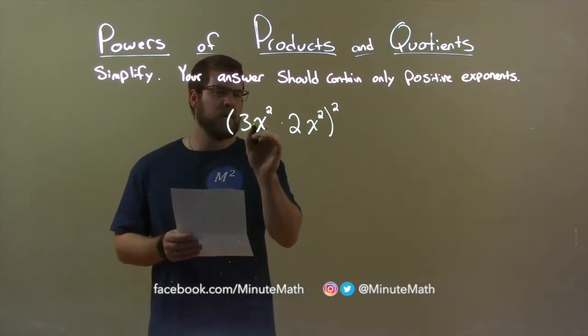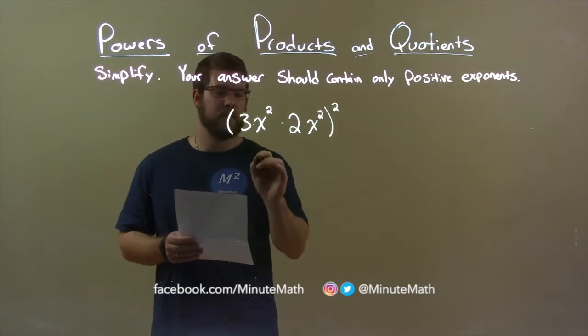Okay, so we look at the coefficients, we have the 3 and the 2, and we can multiply them together first. 3 times 2 is 6.